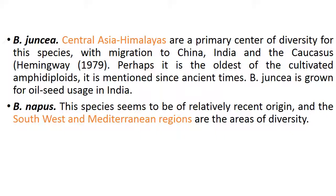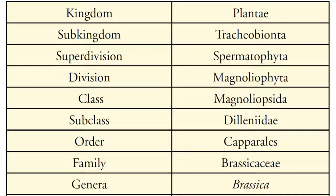Brassica juncea is perhaps the oldest cultivated amphidiploid, mentioned since ancient times, and is grown for oilseed usage in India. Brassica napus seems to be of relatively recent origin, with the southwest Mediterranean regions as its area of diversity. Coming to taxonomical classification, Brassica belongs to kingdom Plantae, sub-kingdom Tracheobionta, subdivision Spermatophyta, division Magnoliophyta, class Magnoliopsida, subclass Dilleniidae, order Capparales, family Brassicaceae, genus Brassica.